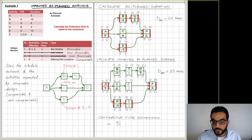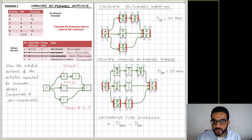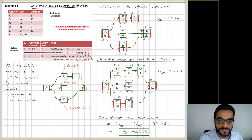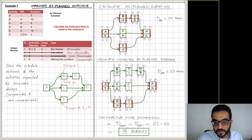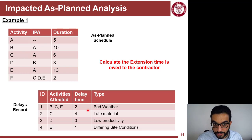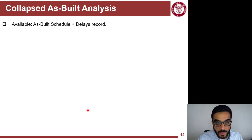After the forward pass on the impacted as-planned schedule, the total duration comes to 23 weeks. The contractor is entitled to a time extension equal to 23 minus 20 = 3 weeks. This means the contractor won't pay liquidated damages for delays up to three weeks. Any delay beyond three weeks would still be subject to liquidated damages. That was the solution applying the Impacted As-Planned analysis.